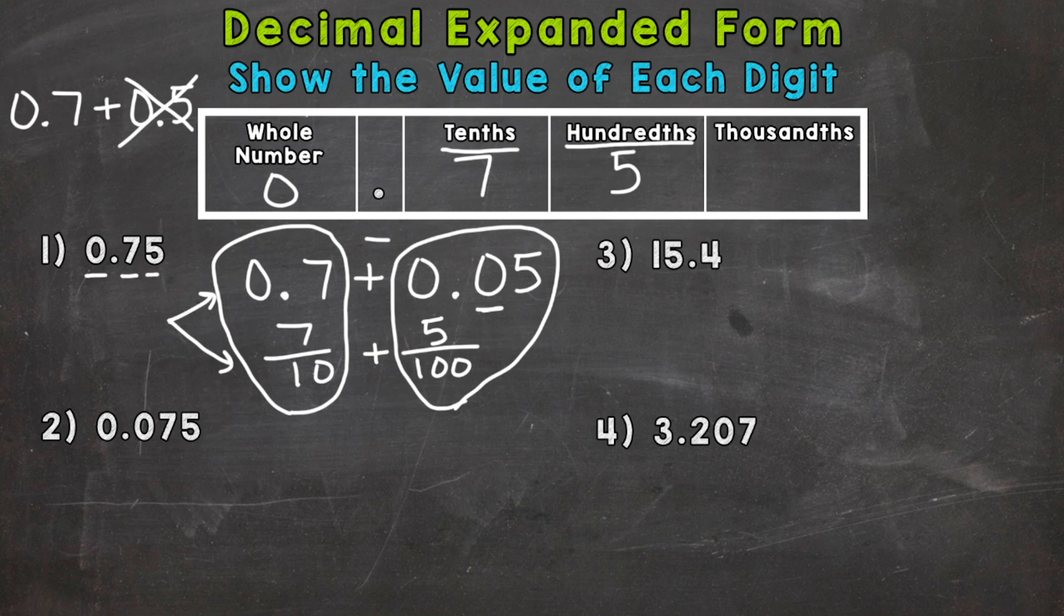So on to number two, where we have seventy-five thousandths. Now it looks very similar to number one, but the seven is in a different place and the five is in a different place. So we do not have a whole number. We have a zero in the tenths and our seven is in the hundredths place this time.